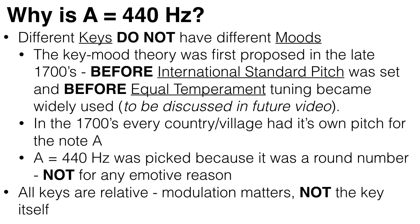This also means that those people who believe that different keys have different moods are wrong. E flat major isn't any more serious than A major, and E major isn't any more joyful than G major. This mood-key idea was first published in the 18th century, well before the international standard tuning was fixed in 1939, and before equal temperament tuning became popular and widely used.